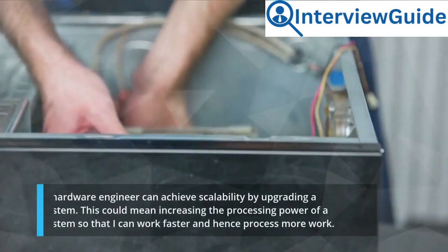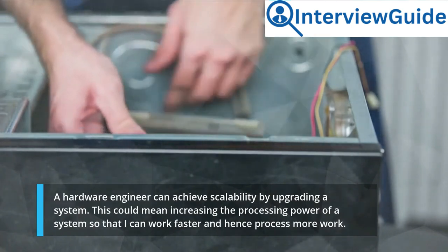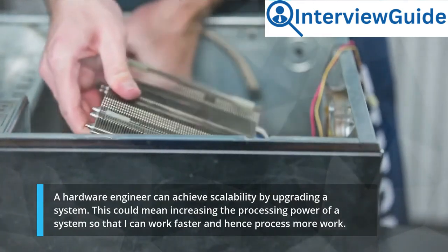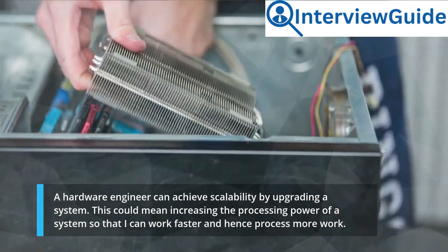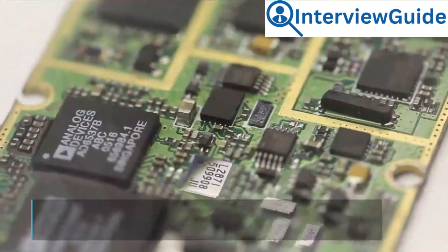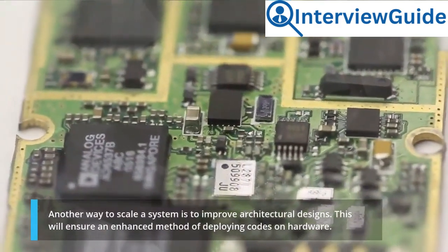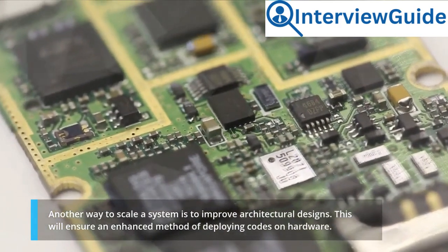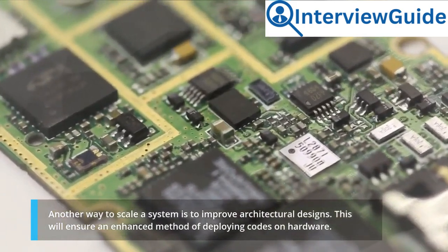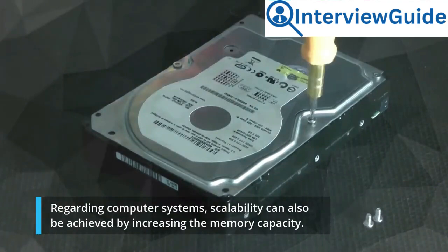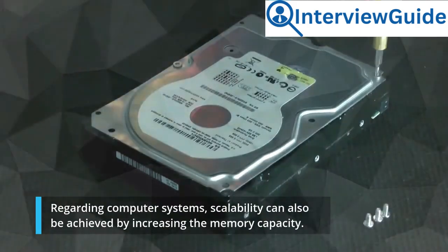Sample Answer: Scalability can be achieved by upgrading a system. This could mean increasing the processing power of a system so that it can work faster and hence process more work. Another way to scale a system is to improve architectural designs. This will ensure an enhanced method of deploying codes on hardware. Regarding computer systems, scalability can also be achieved by increasing the memory capacity.